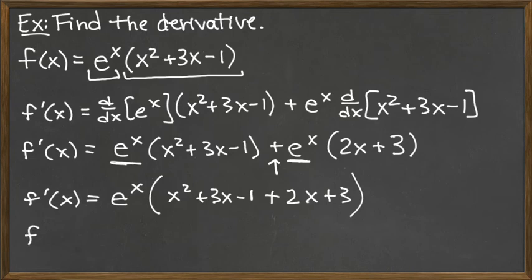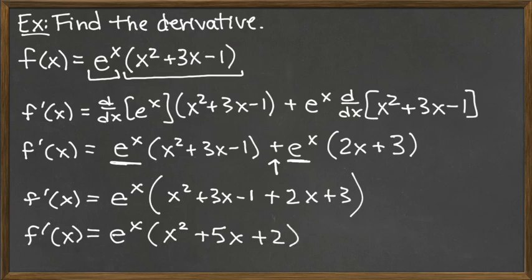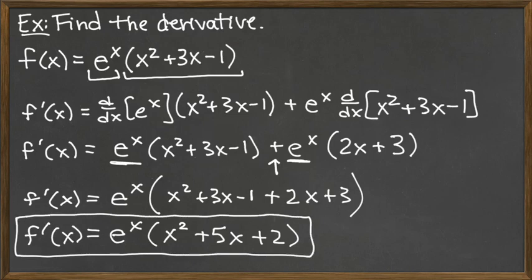So combining our like terms within the parentheses, we have e to the x times – the only x squared term is that first one, so we just have x squared. We've got a 3x plus a 2x for a total of 5x. And then we have a minus 1 plus 3 for a total of plus 2. And that's a nice factored form of our derivative where we had to use the product rule for this problem.